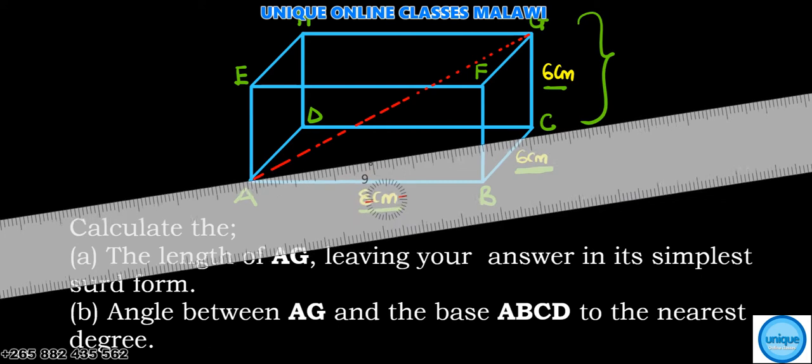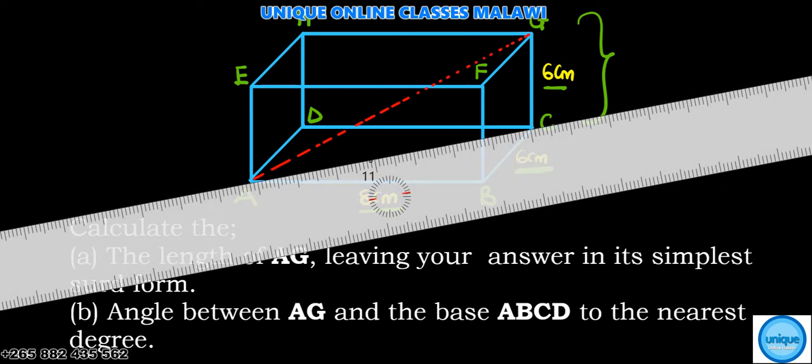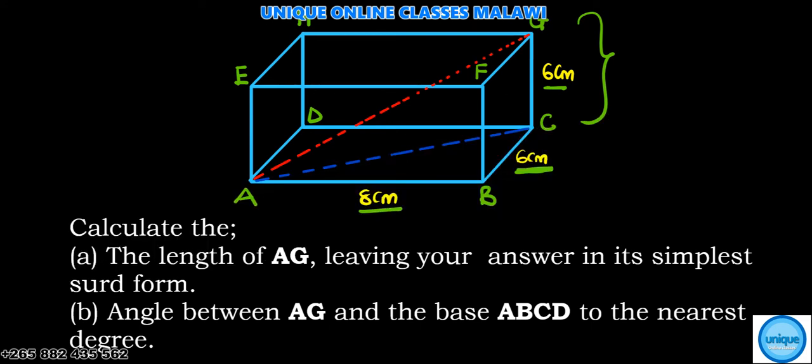This is the angle, so what I need to do is draw this line joining that point. To find this angle, we need to find line AC, the base line AC. This base is rectangle ABCD, and AC is the diagonal, so we need to use the Pythagorean theorem.